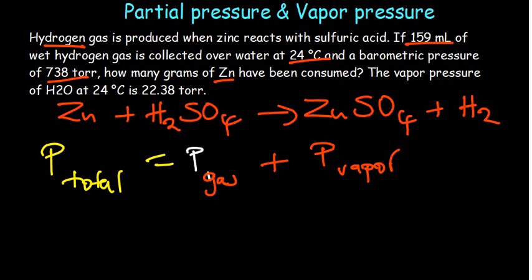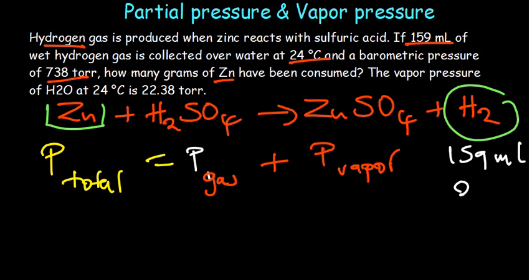In this case, for us to basically get to find the mass of zinc, we know we need to apply stoichiometry. The information we've been given has been given about the hydrogen gas, right? What information we've been given about the hydrogen gas? We've been given its volume, we've been given its temperature.